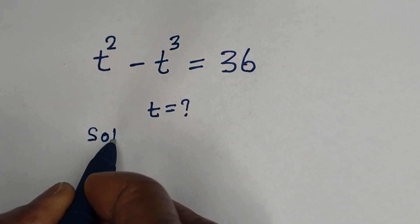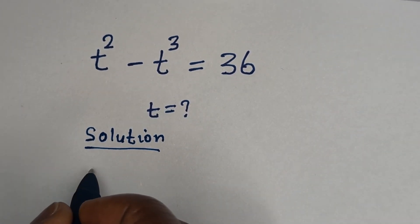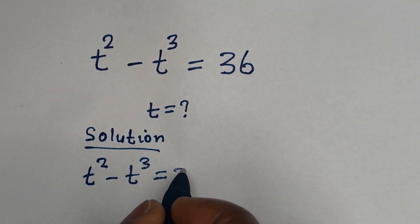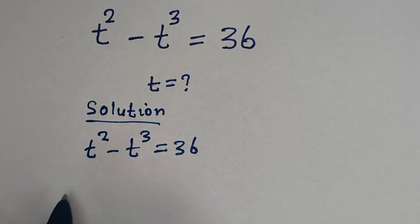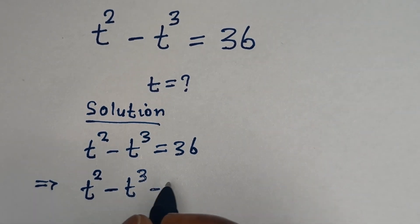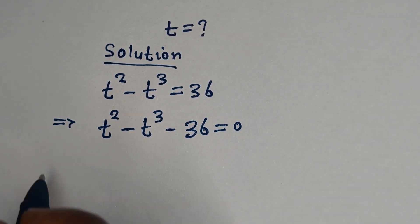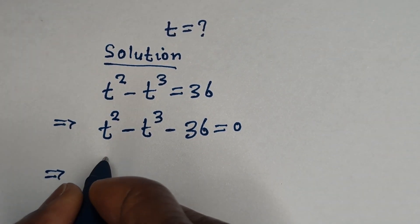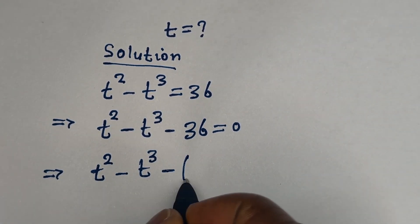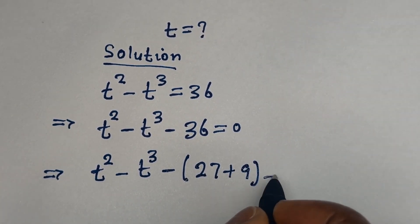Solution. We have the given equation: t squared minus t raised to power 3 is equal to 36. This is the same thing as t squared minus t raised to power 3 minus 36 is equal to 0. We can write t squared minus t raised to power 3 minus 36 as minus bracket 27 plus 9, equal to 0.